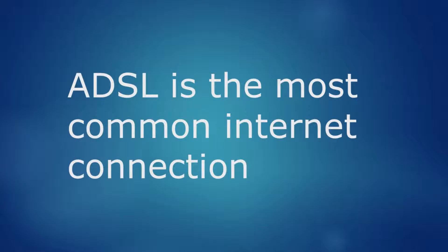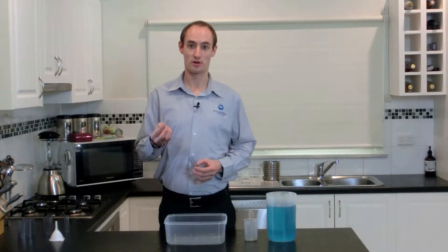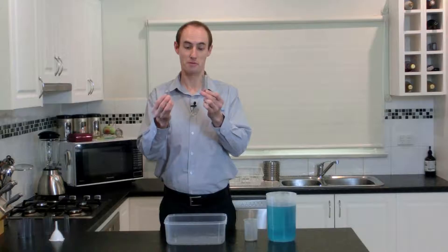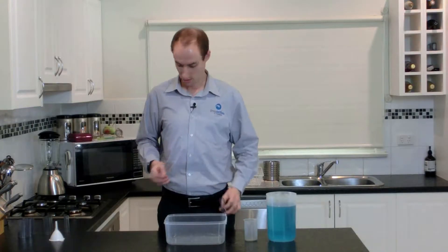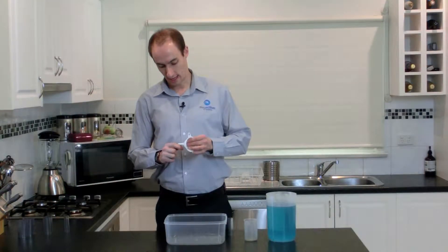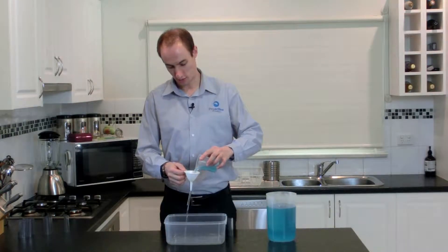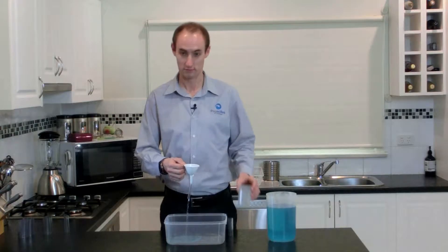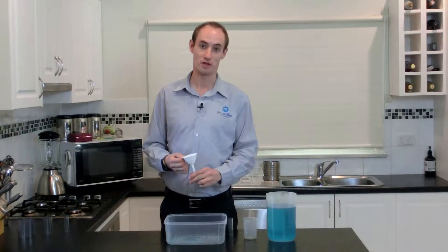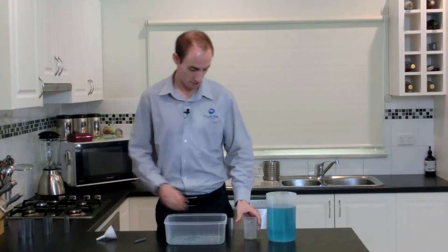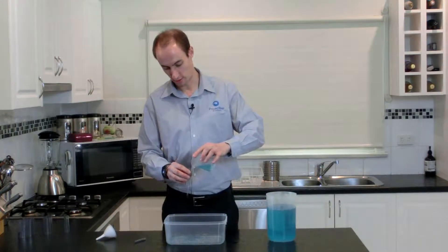We'll get started now and talk about the most common form of internet, which is ADSL. Most Australian businesses have ADSL and we also have it in our homes. ADSL is made up of a slow upload speed and a reasonably fast download speed, which I'll represent with these two bits of tubing. So if we are sending a big email to a client we might find that when we're uploading it, it takes a while. Whereas if we're downloading an email that's equally as big, it comes in reasonably quickly.